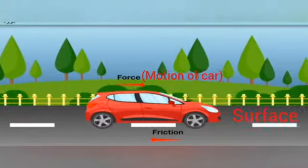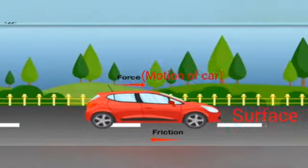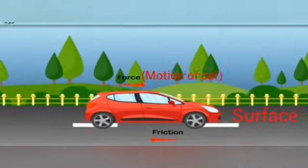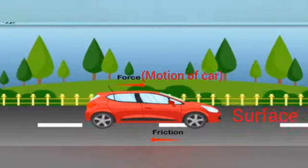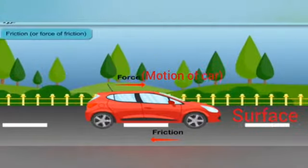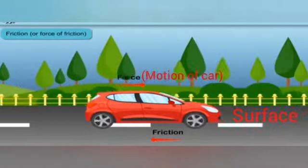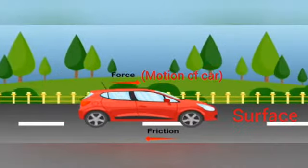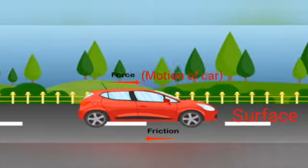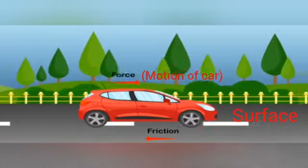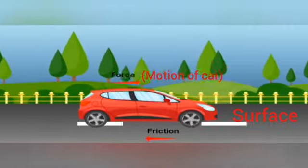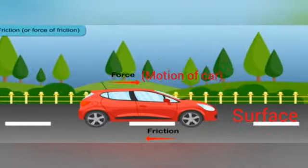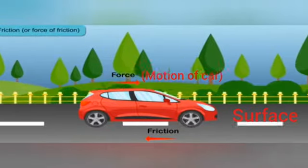Friction is a type of force that comes into play whenever a body moves over a surface. It acts between two surfaces in contact and opposes the motion of one body over the other. As you can see, the motion of the car and the frictional force are in opposite directions, so friction acts in a direction opposite to the direction of motion.